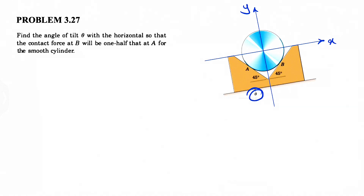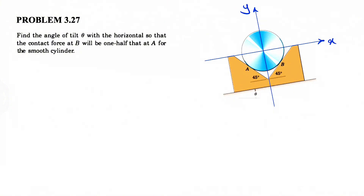By smooth, the question is referring to frictionless surfaces, so we don't need to consider any friction. We're going to start with the free body diagram as always. We're going to have the normal force at point A, which is perpendicular to the surface — we'll call it N-A. The same story applies for B, giving us N-B. And obviously we have the weight W of the cylinder acting vertically downward.